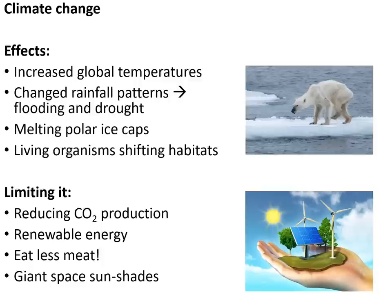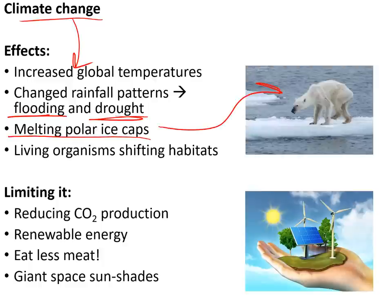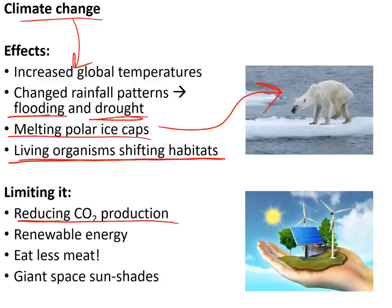Climate change caused by global warming is increasing global temperatures, changing rainfall patterns causing flooding and drought, melting the polar ice caps causing sea level rise and destroying habitats for polar bears and seals, and causing organisms to shift their habitats. To limit climate change we must reduce carbon dioxide production by using renewable energy, eating less meat, and considering technological solutions such as placing giant mirrors in space to reflect sunlight.